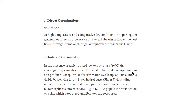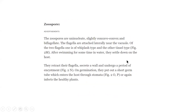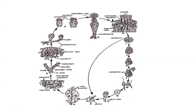So it behaves like a zoosporangium and it produces zoospores. The zoospore swells up and divides, then gets rounded up to form a zoospore. You can see the zoospores here. You can see how the zoospores are released. Inside the conidium, the protoplast divides into many segments, and each protoplast is surrounded by a cell wall.